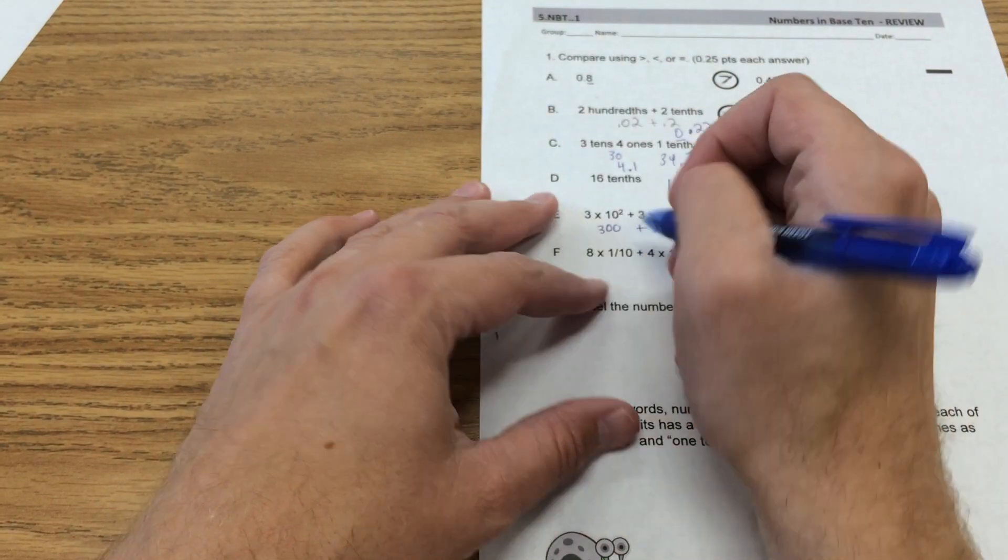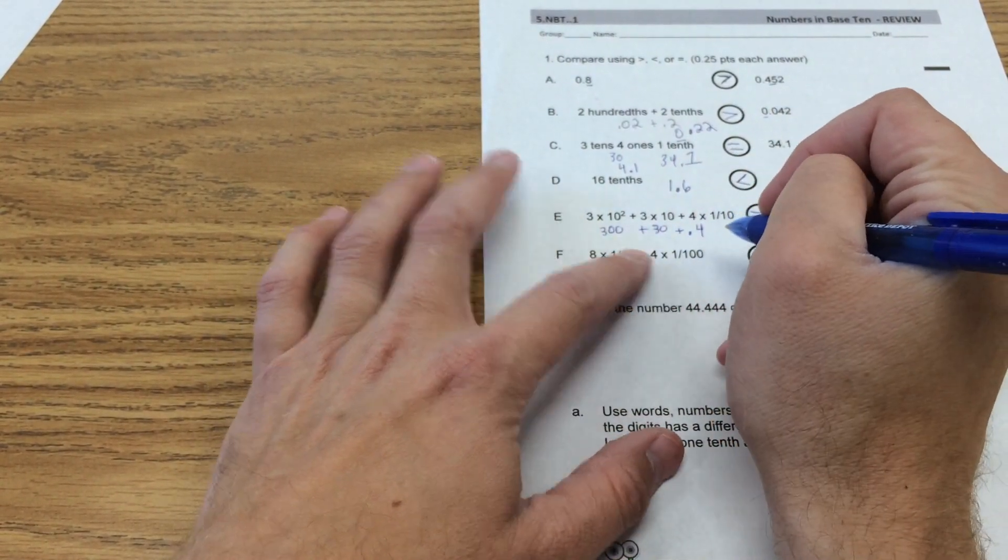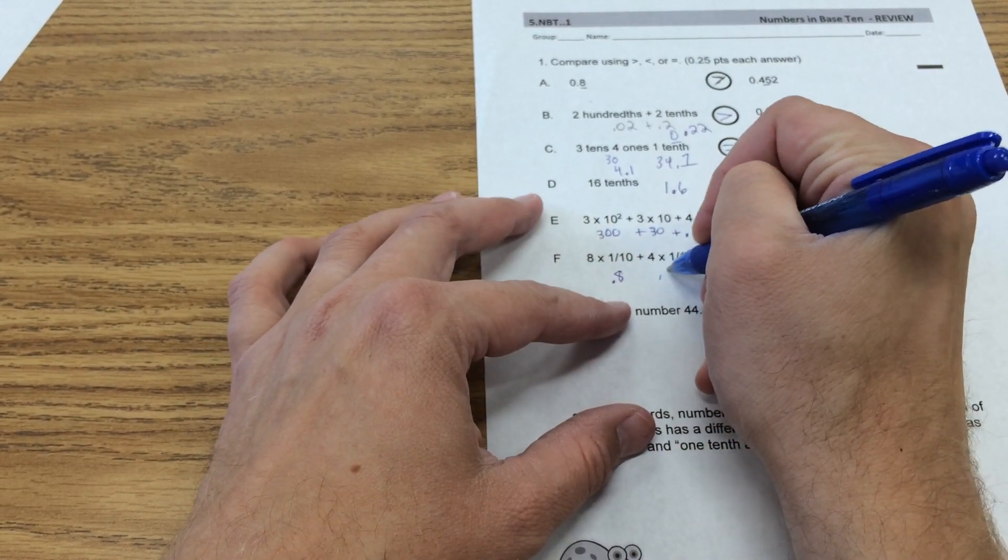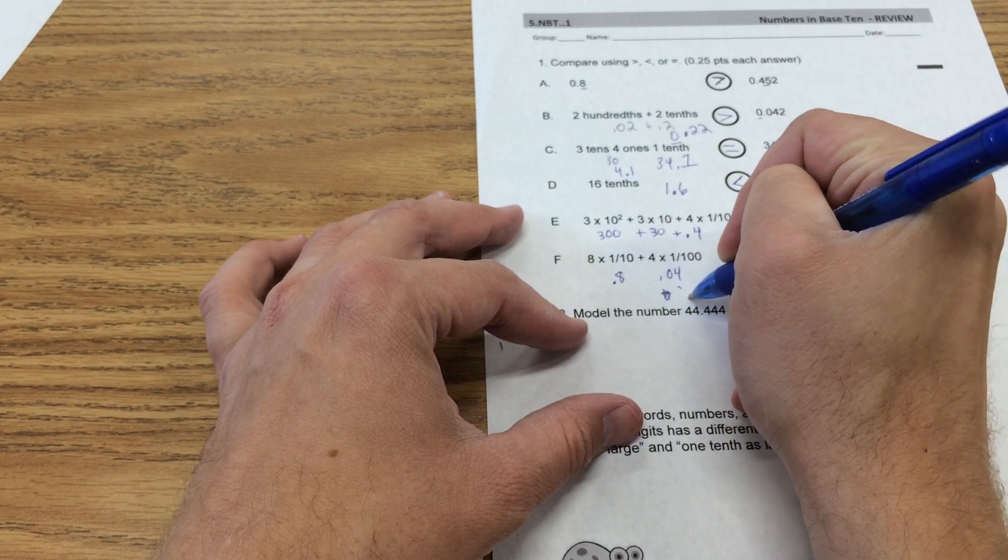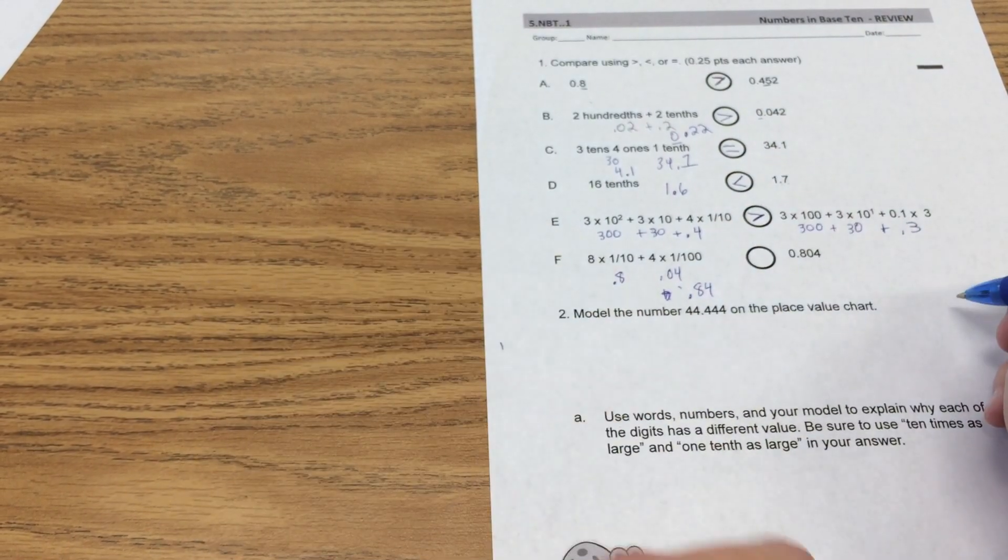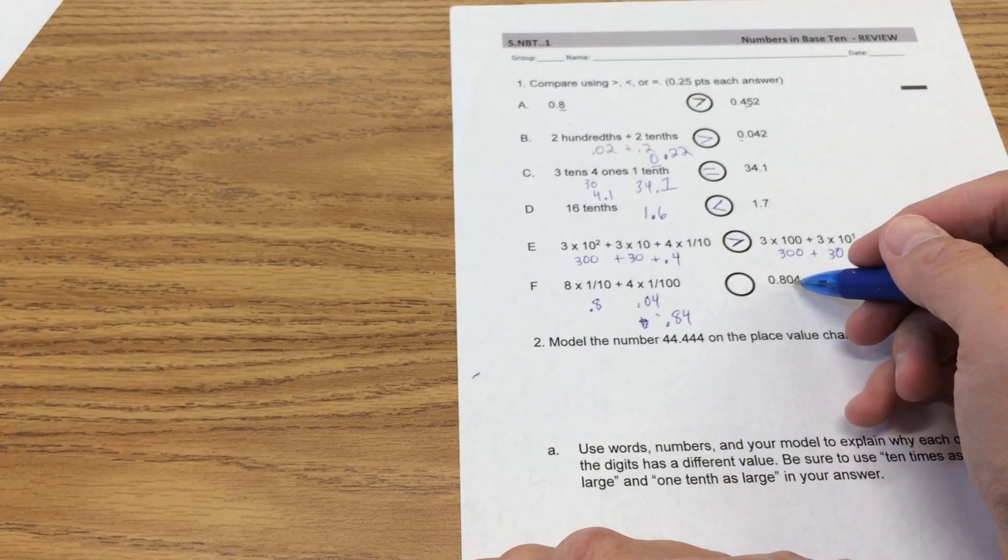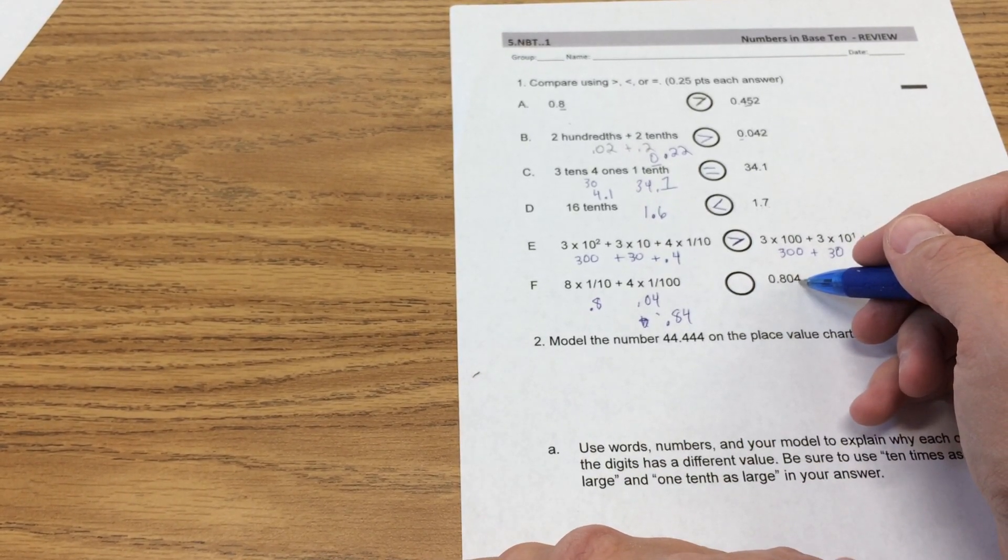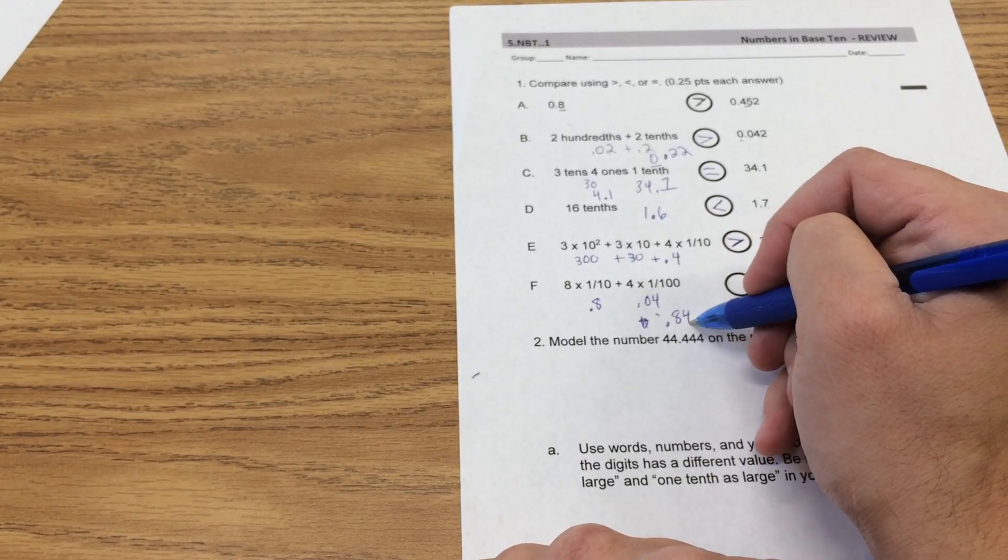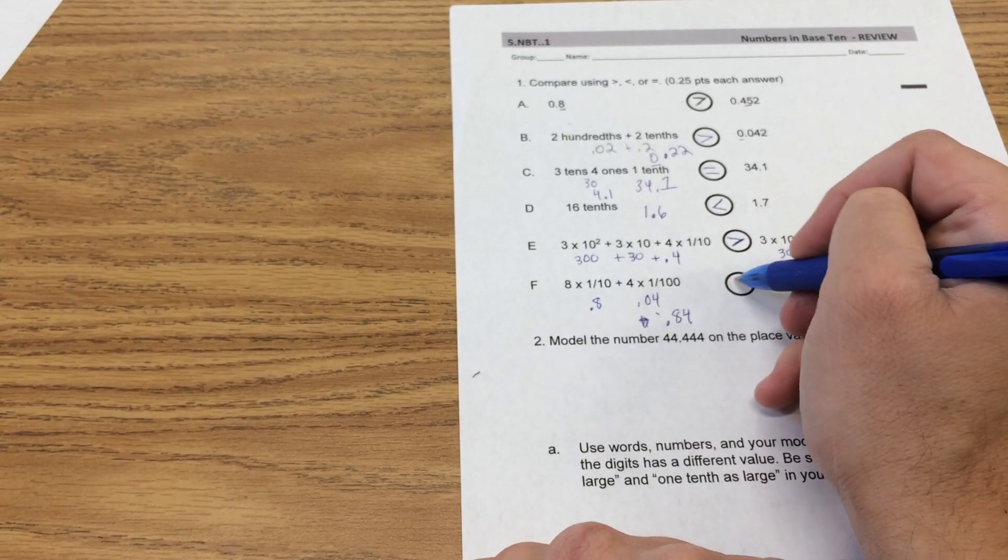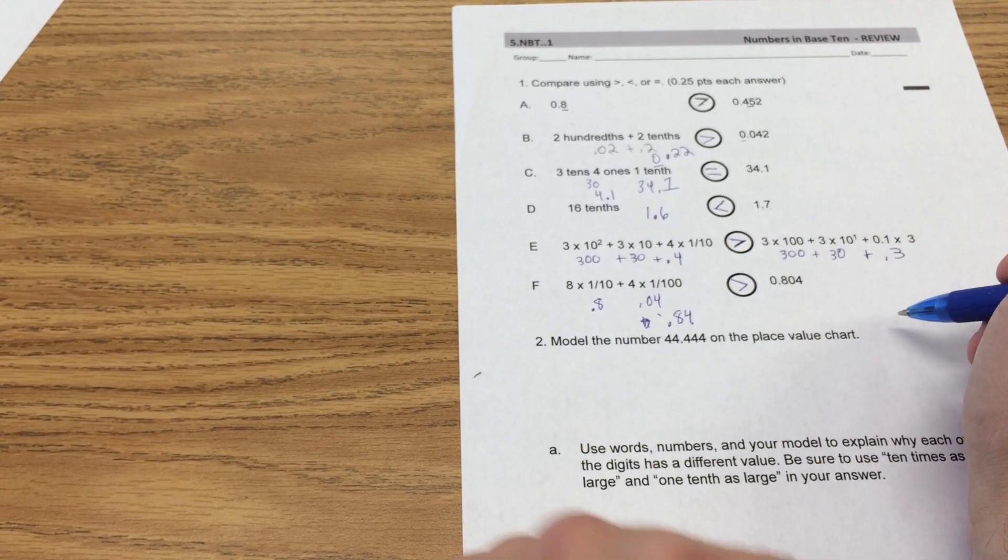8 times 1 tenth plus 4 times 1 tenth. Put them together you get 84 hundredths. And these kind of look similar: 84 hundredths. And over here we have 804 thousandths. So let's look. There's an 8 in the tenths place, 4 and a 0. This has to be larger. 4 hundredths is bigger than 0 hundredths.